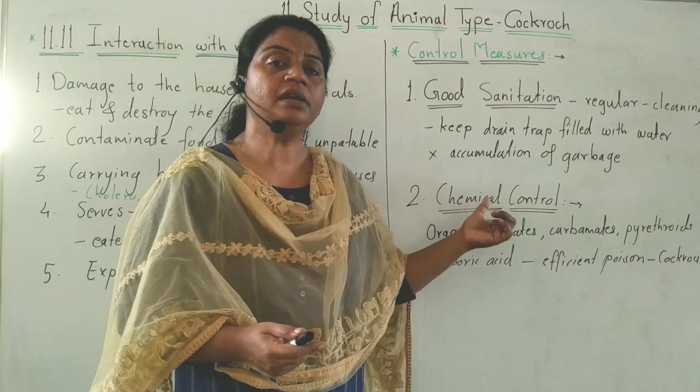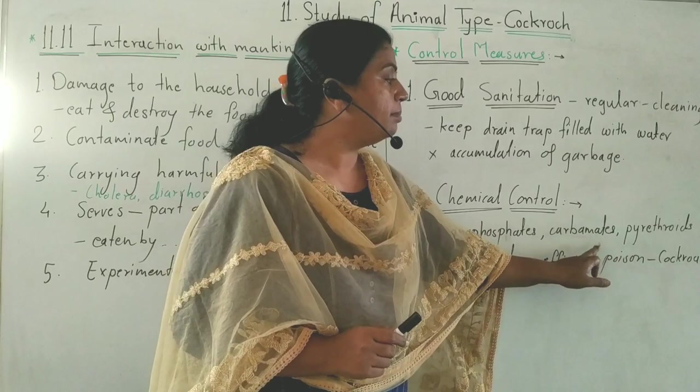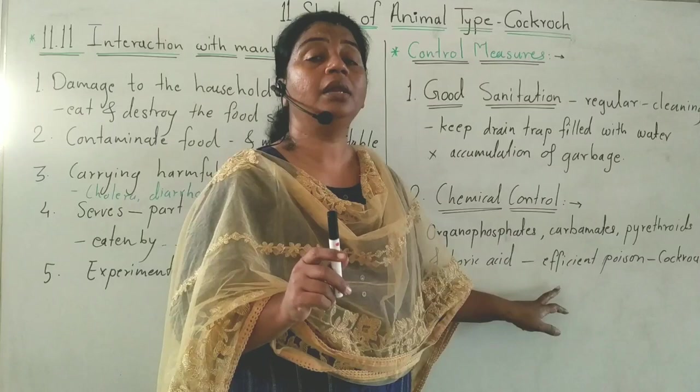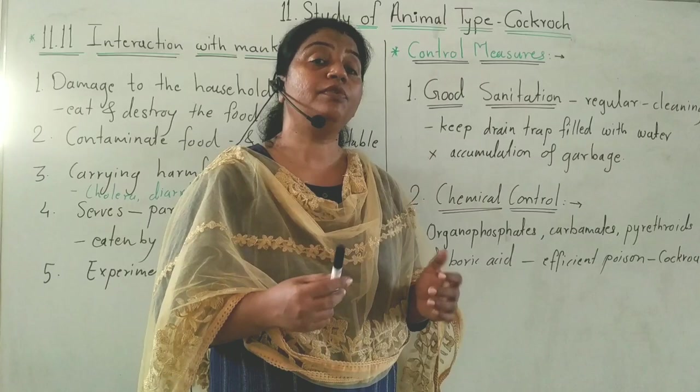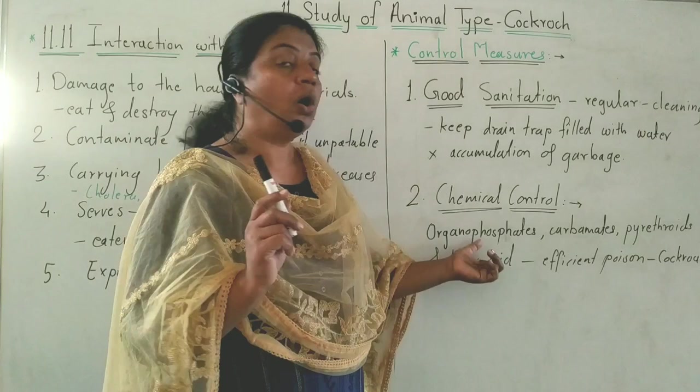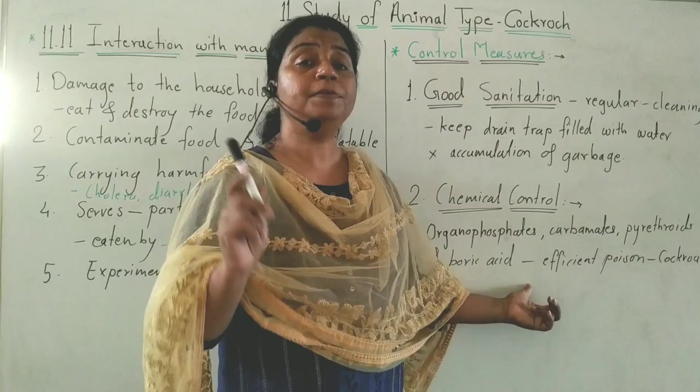The second control measure is chemical control. Organophosphates, carbamates, pyrethroids, and boric acid are efficient poisons of cockroaches. Various formulations of these are available in the market under various brand names.